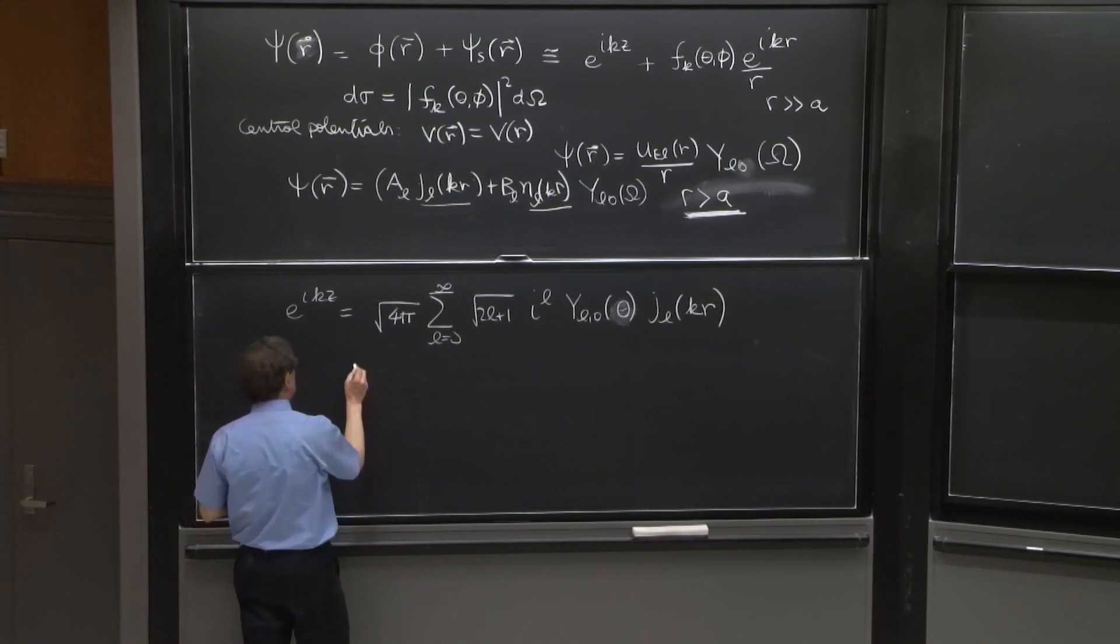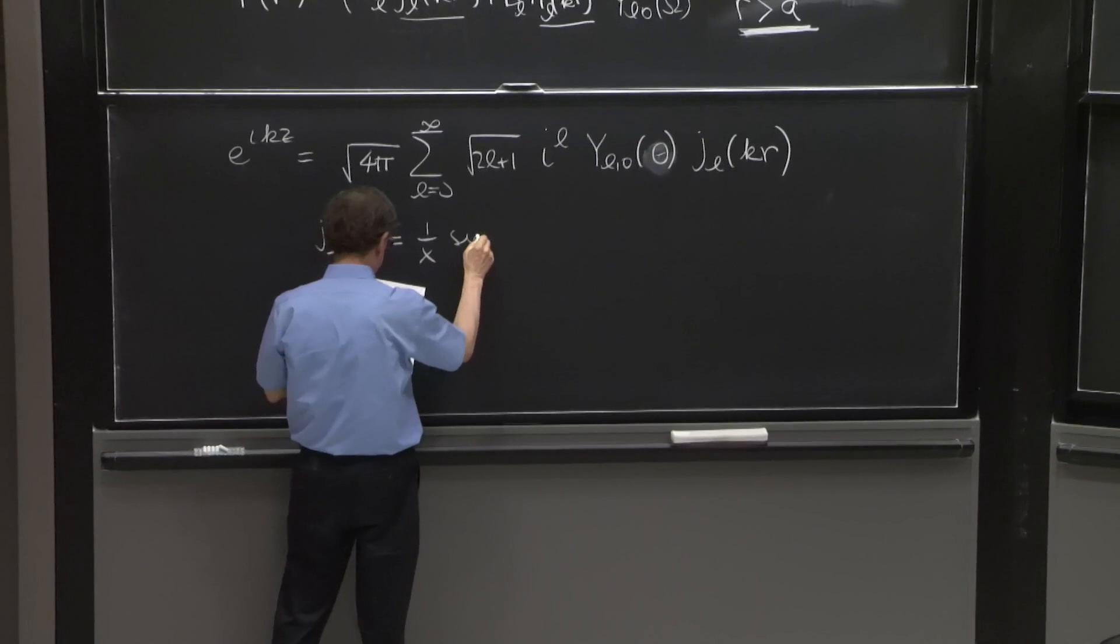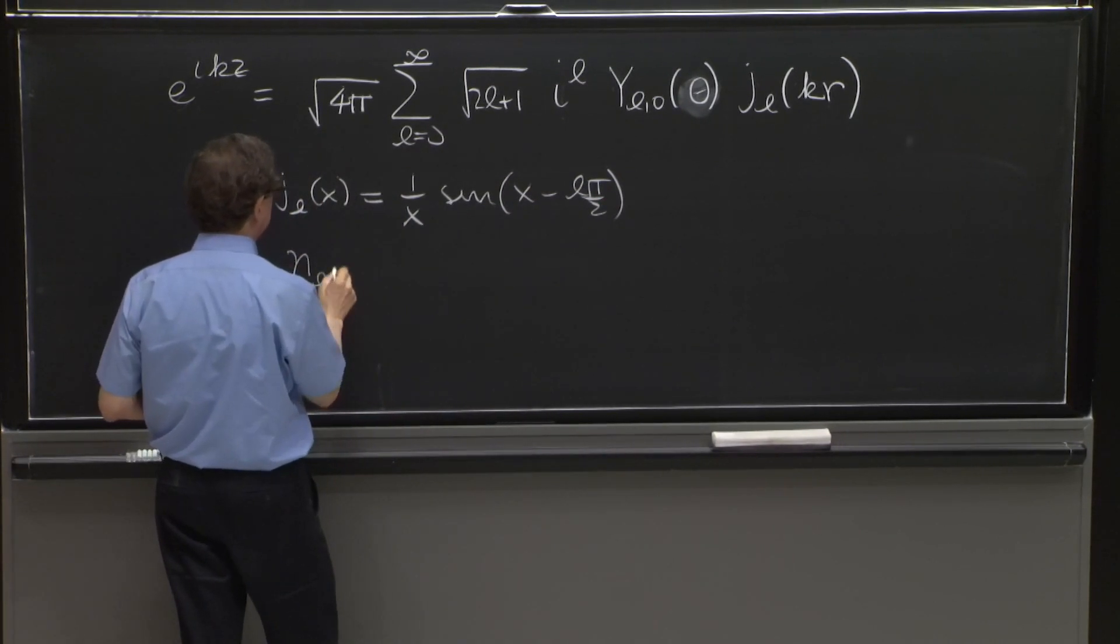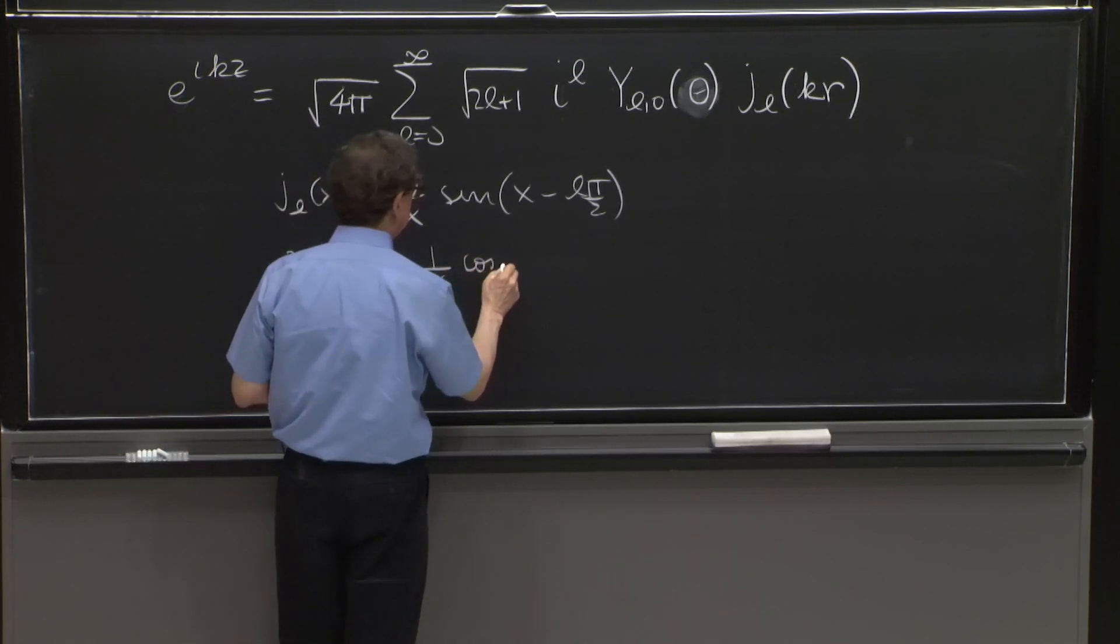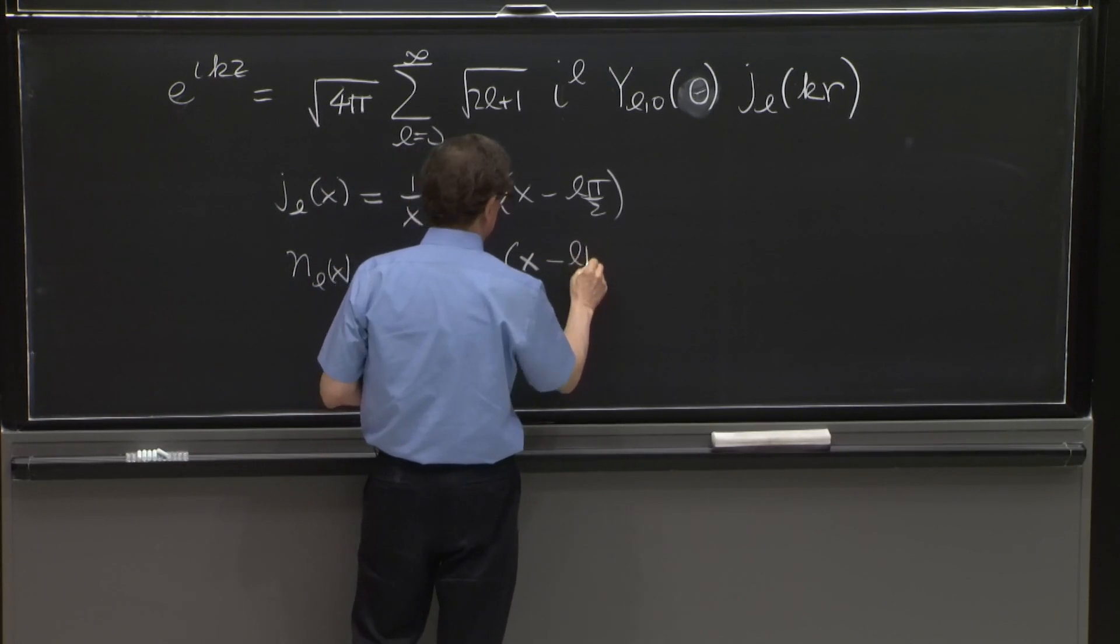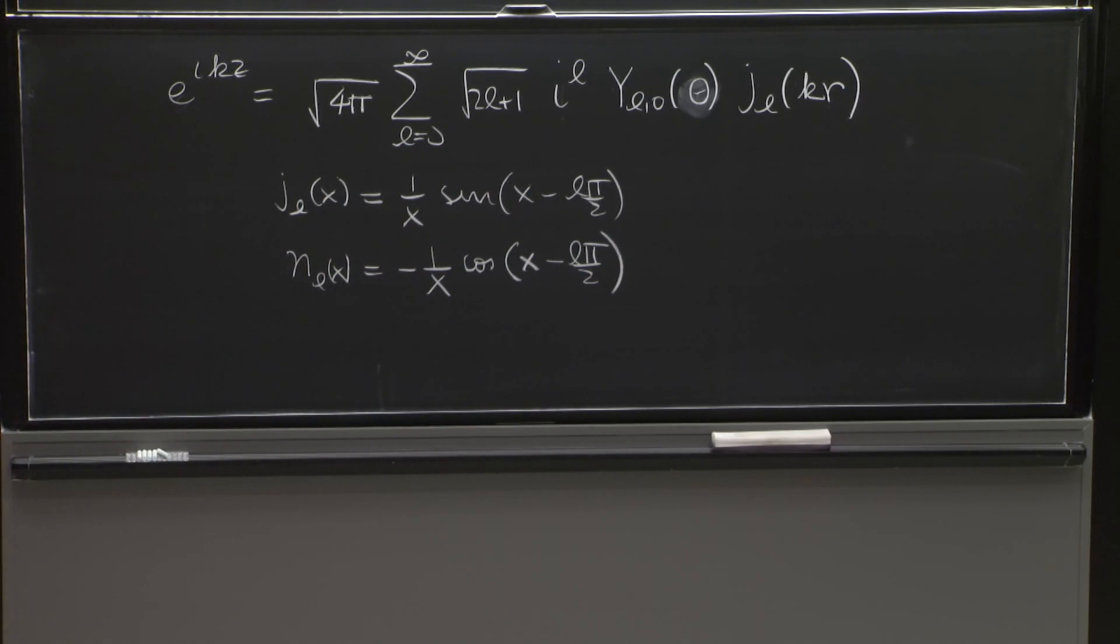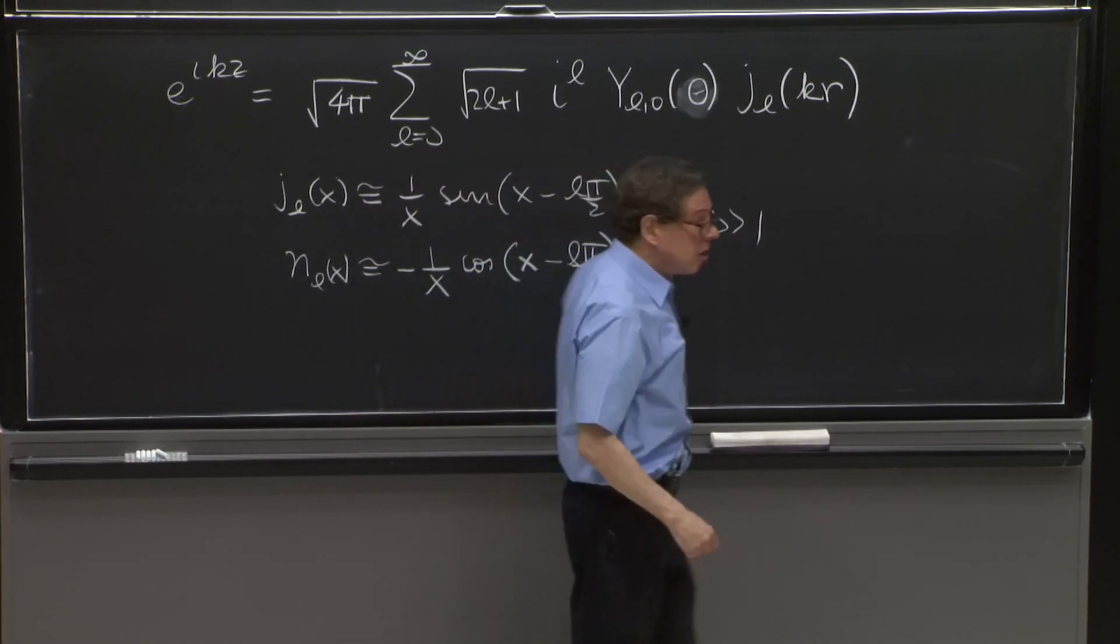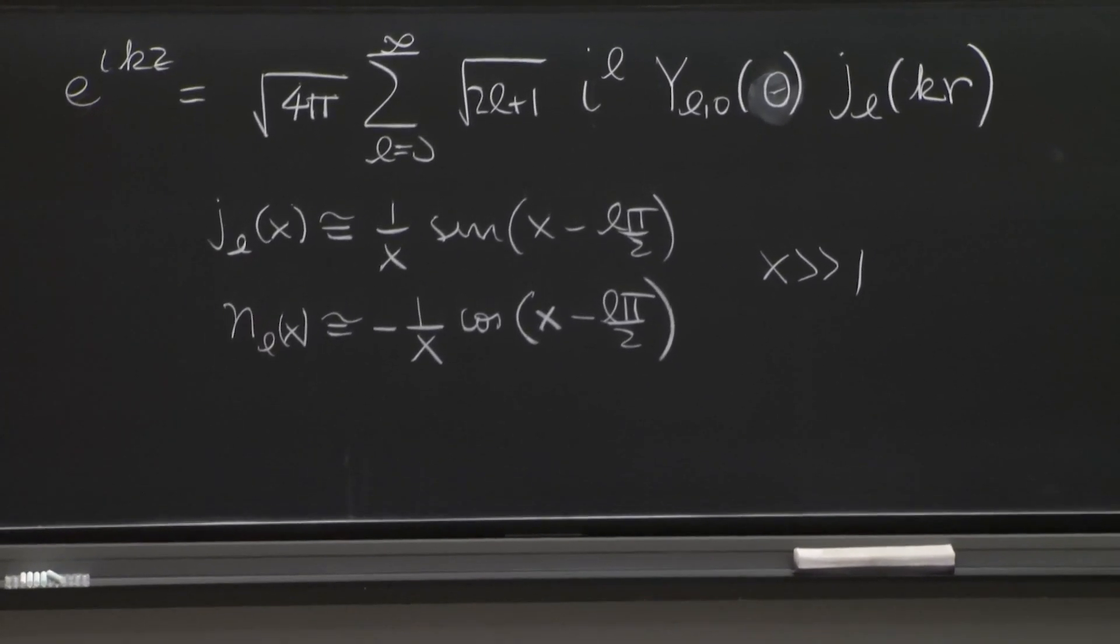Last but not least, we have an expansion that is useful for large argument of the spherical Bessel functions. They both fall off like 1 over the argument with sines and cosines. And you see a constant shift there in the sines and cosines of L π/2. And this is for x much greater than 1. Not exact either, but approximate.